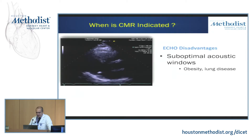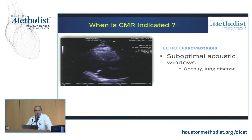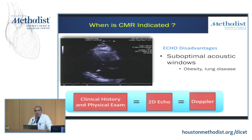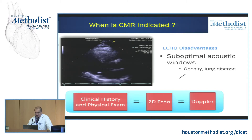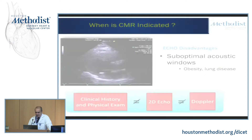Let's go through example scenarios where people are typically referring patients for CMR. The first and very simple case is if you have suboptimal quality echo images — due to obesity, lung disease, or a variety of different reasons. Also important: when you want concordance between your clinical history and physical exam, the 2D echo features, and the spectro-Doppler features. In scenarios where there's discordance — where you hear a loud murmur but don't see a very big jet, or you see what looks like severe MR but the ventricle doesn't seem to have remodeled — that's a scenario where you may want to think about referring a patient for CMR.